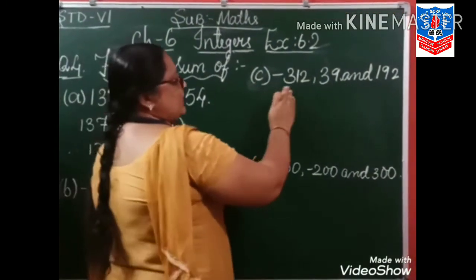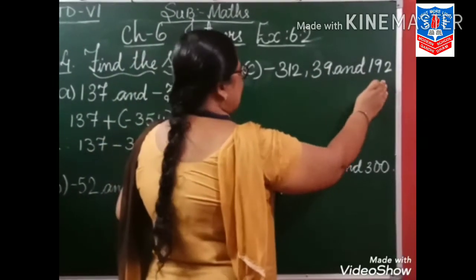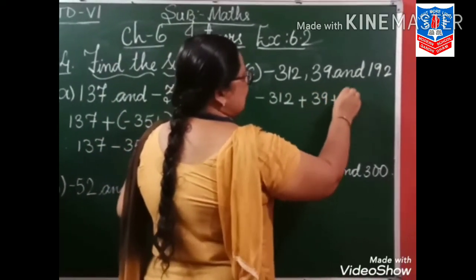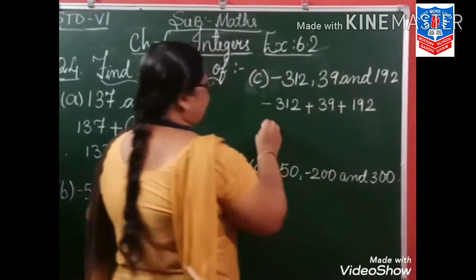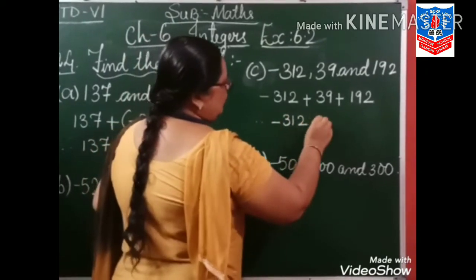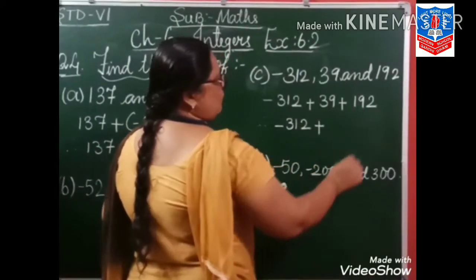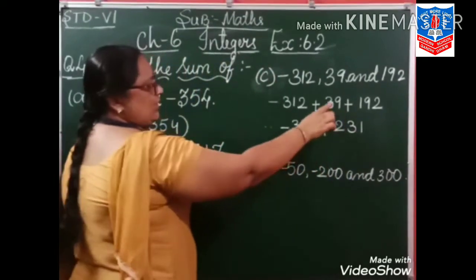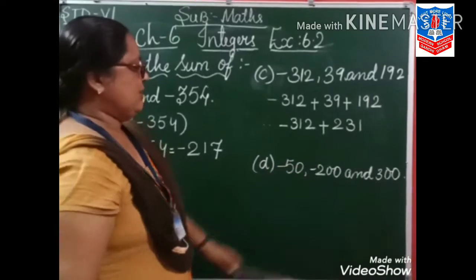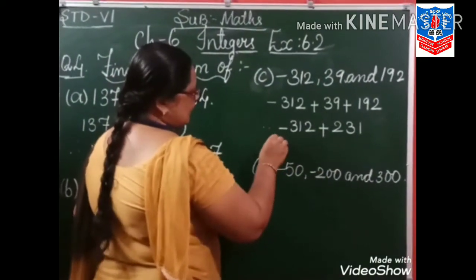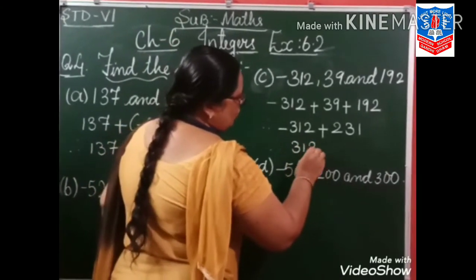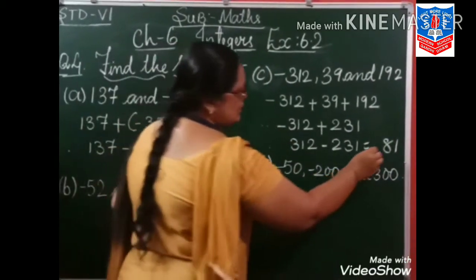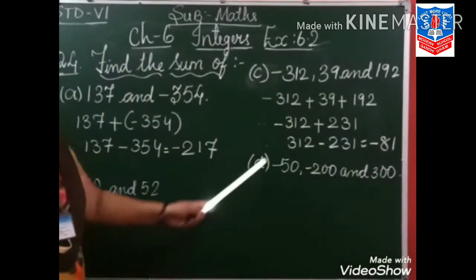Now let us do C: minus 312, 39, and 192. So minus 312 plus 39 plus 192. First let us add 39 plus 192, that is 231. Now again, minus plus minus — so 312 minus 231 is equal to 81, and the greater sign is minus. So our answer is minus 81.